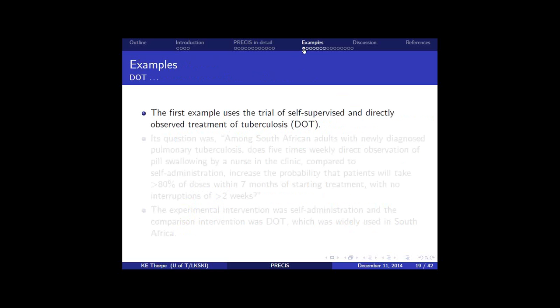Okay. So back. So we're going to consider two examples of two different trials. And these were sort of both done in the paper, the original PRECIS article. So I'm going to focus on this one first called DOT, and it's Directly Observed Treatment of Tuberculosis. So it's a trial of self-supervised and directly observed treatment of tuberculosis. So here's what its question was. Among South African adults with newly diagnosed pulmonary tuberculosis, this five times weekly direct observation of pill swallowing by a nurse in the clinic compared to self-administration increased the probability that patients will take more than 80% of those within seven months of starting treatment with no interruptions in more than two weeks.